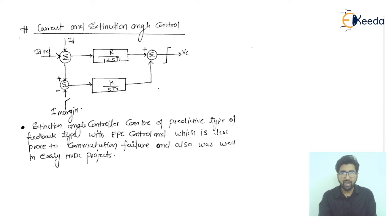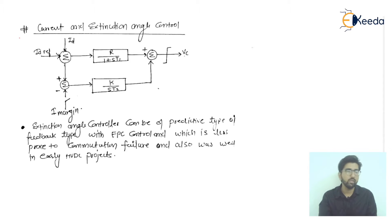In this system there are two blocks with gains. There is a summing point where id is fed, and id_ref is given as the reference. These are summed up, and we also have the i-margin block. The output of these blocks is fed to a summation, and then we get the control voltage.